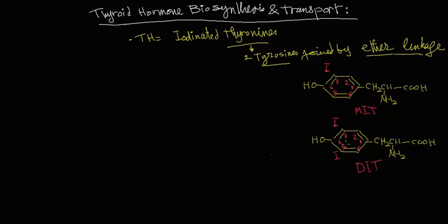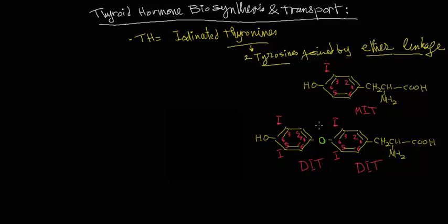If we consider two molecules of diiodo tyrosine associating with each other, we'll end up with what's called ether linkage. And the molecule which comes out of that is called 3,5,3-prime,5-prime tetraiodo thyronine. We call this T4.